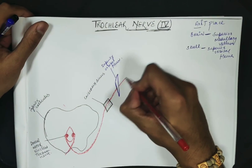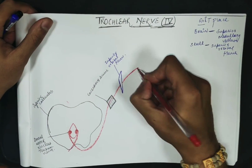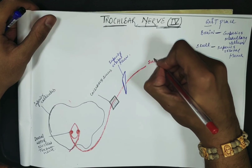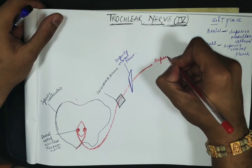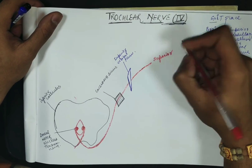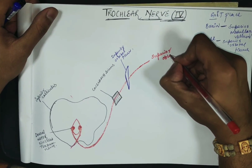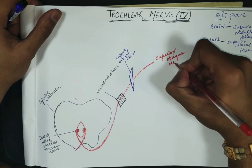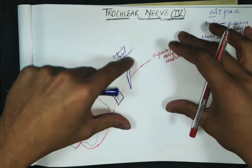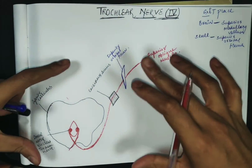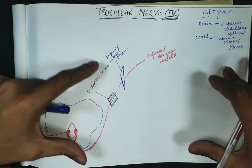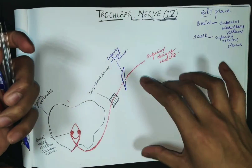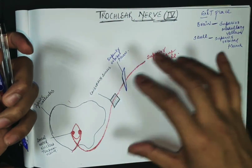Because the trochlear nerve is purely motor, it does not contain any ganglion. It directly supplies the only eye muscle it innervates — the superior oblique muscle.